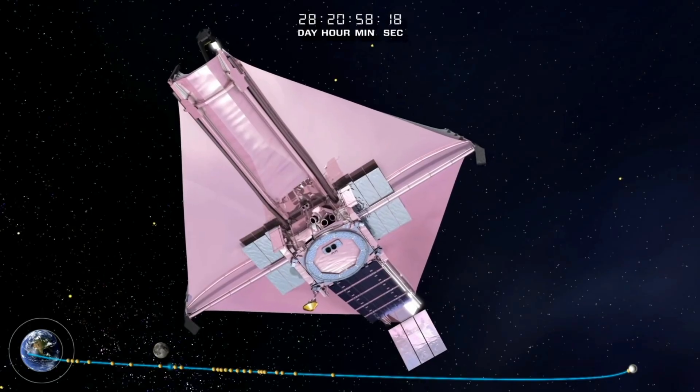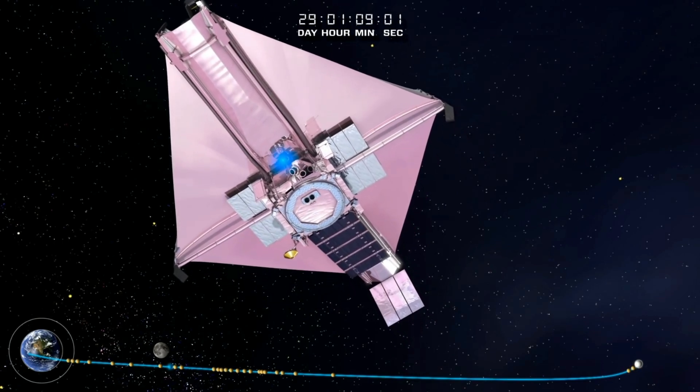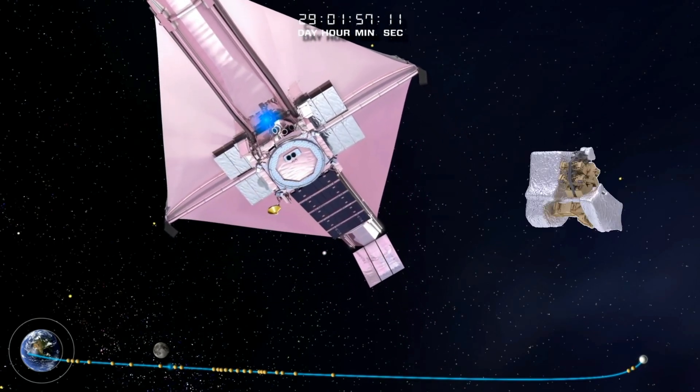Although mostly solar powered, the JWST needs a small amount of finite fuel to maintain its orbit and instruments. So is there any hope?